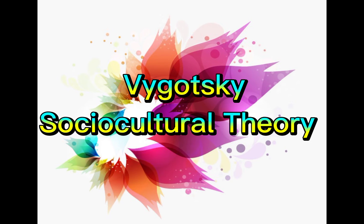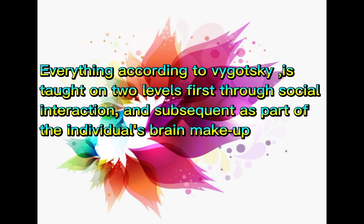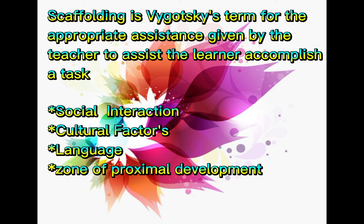Vygotsky's Sociocultural Theory: Learning is a social process rooted in the origins of human intellect in society and culture. According to Vygotsky, everything is taught on two levels — first through social interaction, and subsequently as part of the individual's own mental makeup. Scaffolding is Vygotsky's term for the appropriate assistance given by a teacher to help the learner accomplish a task. Key concepts include social interaction, cultural factors, language, and zone of proximal development.